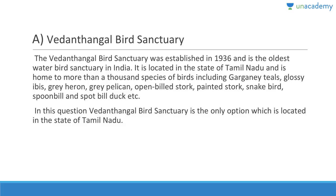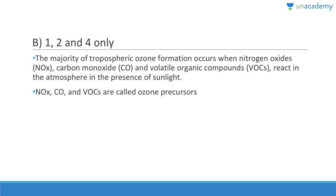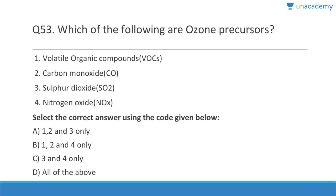Question fifty-three: Ozone precursors — ozone in the stratosphere is good because it saves us from harmful ultraviolet rays that can cause cancer, but ozone in the troposphere is a pollutant. Ozone precursors include NOx, carbon monoxide, and VOCs. Majority of tropospheric ozone formation occurs when nitrogen oxides, carbon monoxide, and volatile organic compounds react in the presence of sunlight. Answer is one, two, and four; sulfur dioxide is not a precursor.